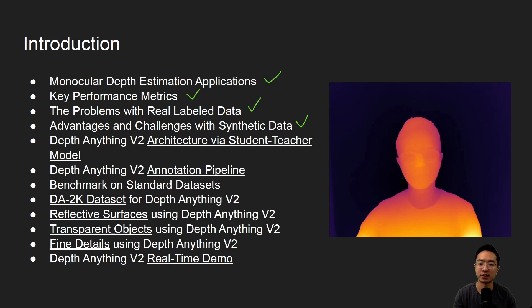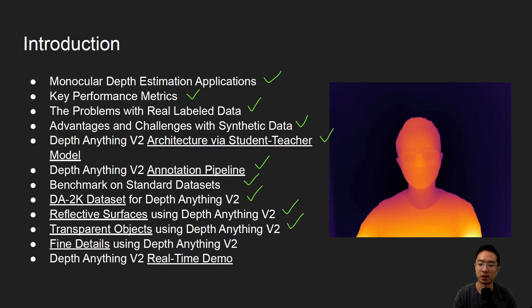We'll talk about the key performance metrics, go over the problems with real label data, the advantages and challenges with synthetic data, the architecture that Depth Anything V2 uses called a student-teacher model, the annotation pipeline, the benchmark on standard datasets, the DA2K dataset, reflective surfaces, transparent objects, fine details, and finally a real-time demo using Depth Anything V2.